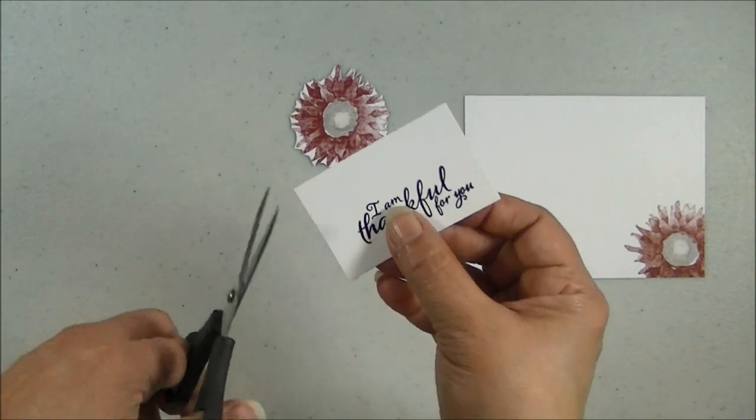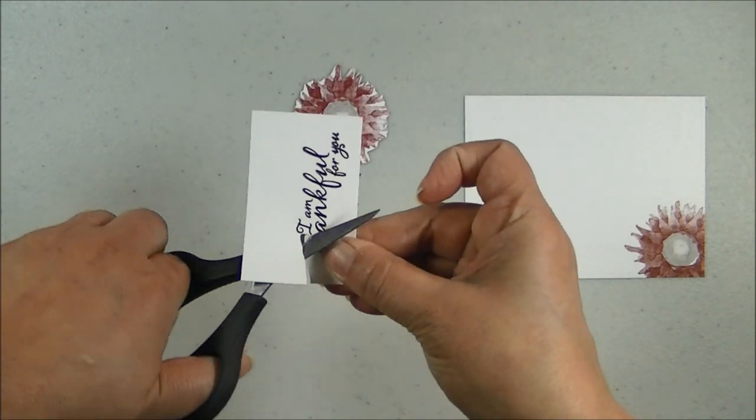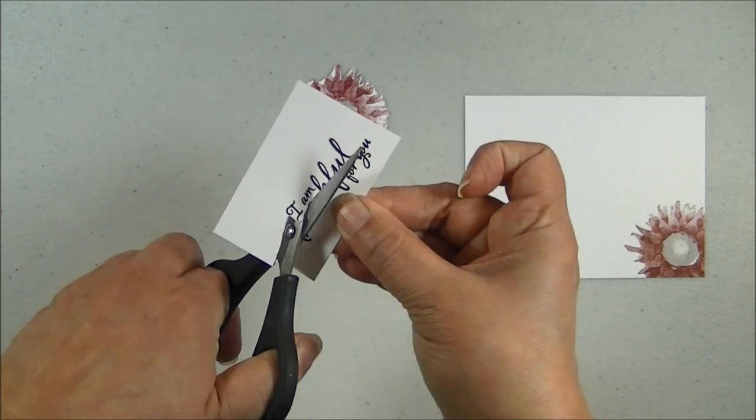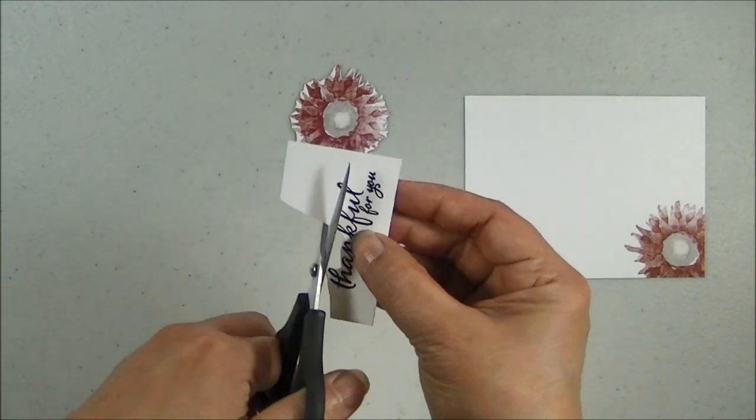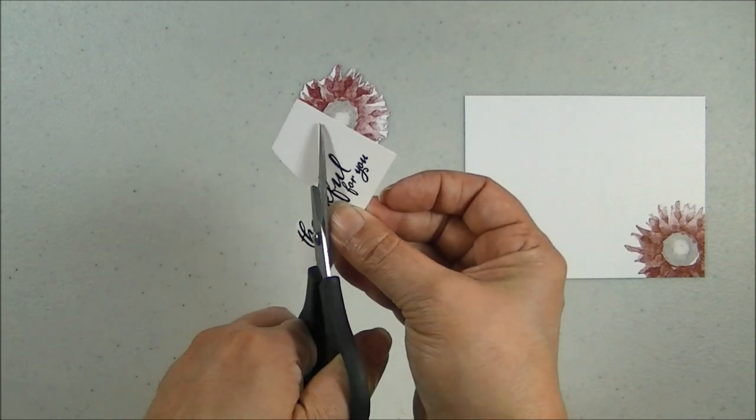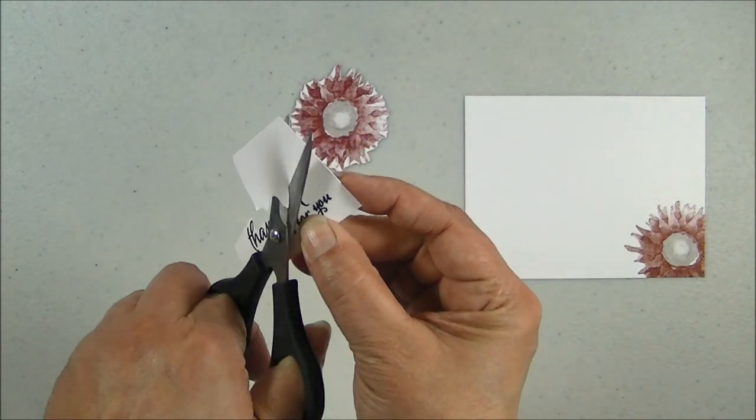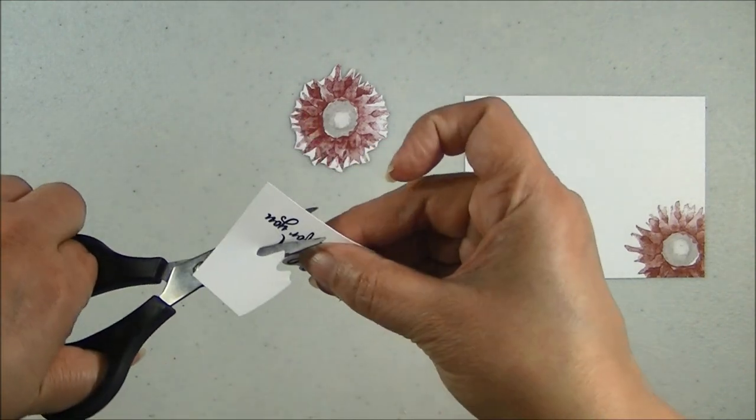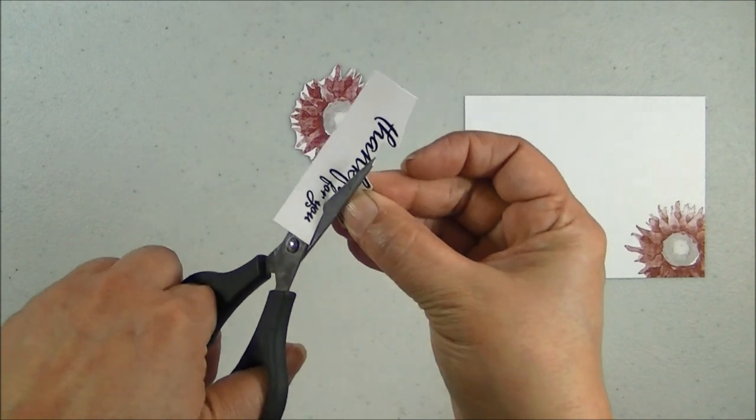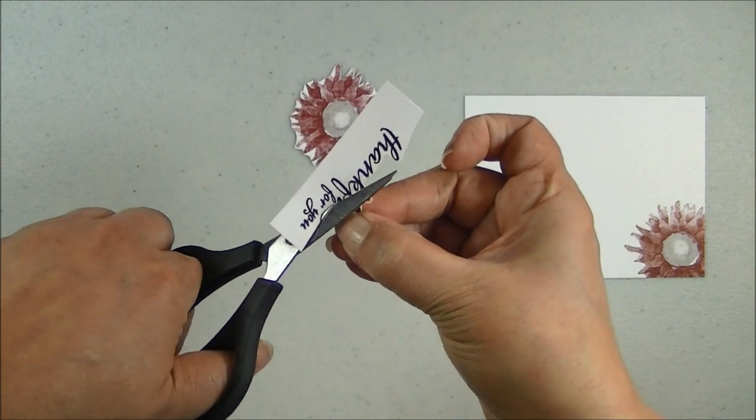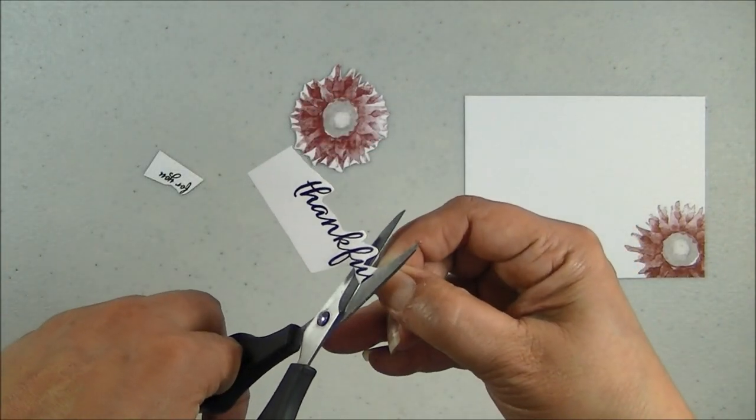The next thing we are going to cut is, we are going to cut this away. So I am cutting above the thankful. I am going to cut away the I am. We are not using those words on our card. So we will set that aside. And then we will keep cutting. We are going to fussy cut the thankful. And again we are not looking for perfection. By all means. Just cut around.